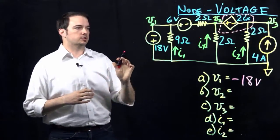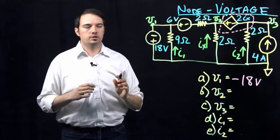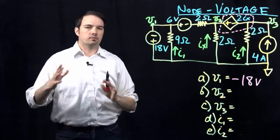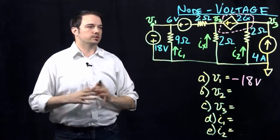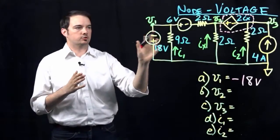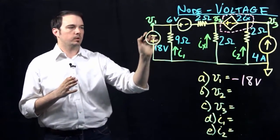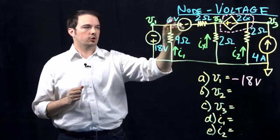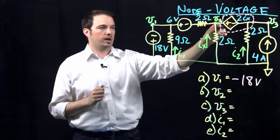And what that allows us to do is now just write a single equation that's going to describe these two node voltages, V2 and V3, rather than having to write two separate equations and then combine them as such. Okay, so now that we have that supernode defined as we've talked about, we can write an equation now to express what the various currents would be traveling into and out of each one of these branches.